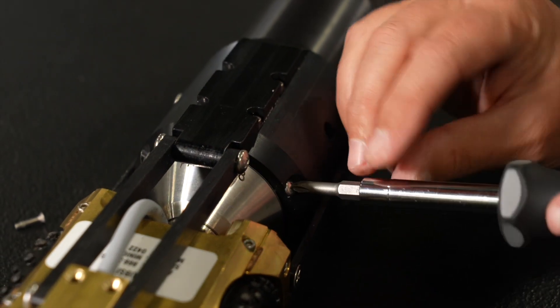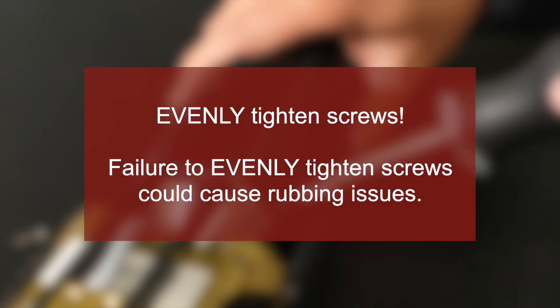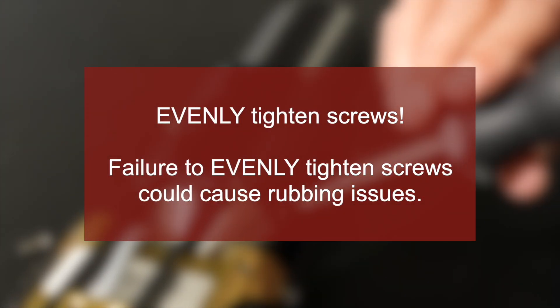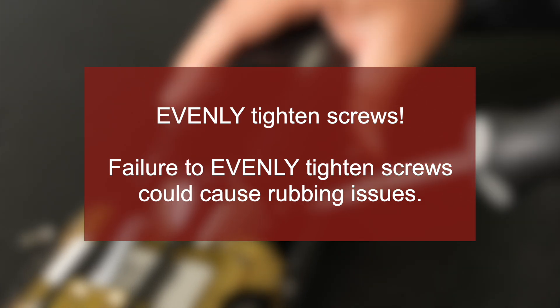Evenly tighten the screws to keep the Omnistar probe centered in the camera sleeve. Failure to evenly tighten the screws could cause rubbing issues between the Omnistar and the camera sleeve when panning the camera.